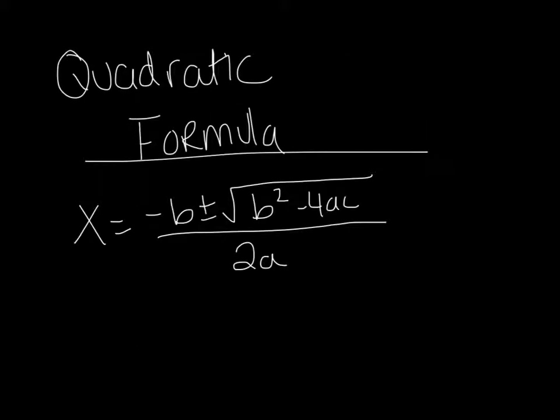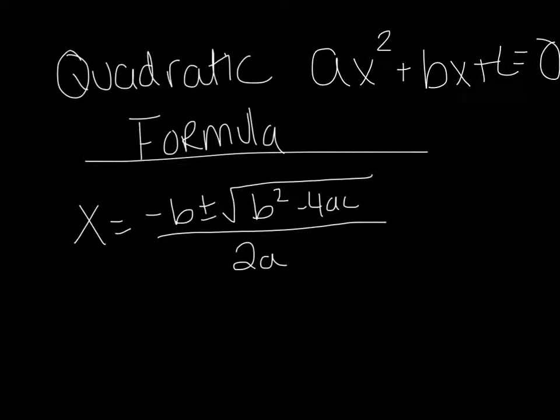Your quadratic formula is right here: x equals negative b plus or minus the square root of b squared minus 4ac, all over 2a. These a's, b's, and c's come from your formulas that we've been using. Everything we've been doing has looked like this, where a, b, and c were some number already replaced — some number x squared plus some number x plus some number. So a, b, and c would just get plugged into your formula.